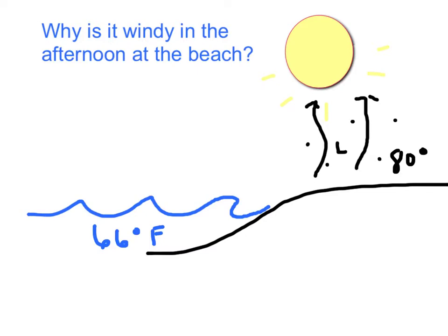The air over top of the ocean is more closely packed together. That would be considered a high pressure. And air is always going to flow from high pressure to low pressure, creating a sea breeze.